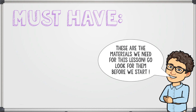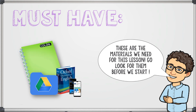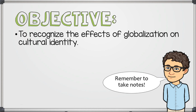These are the materials we need for this lesson. Go look for them before we start. We are going to use the Google Drive folder where you can find the instructions, your notebook, and a dictionary if you need help to understand certain things. Today we are going to recognize the effects of globalization on cultural identity, so take notes of the objective and everything that I'm going to say and show.